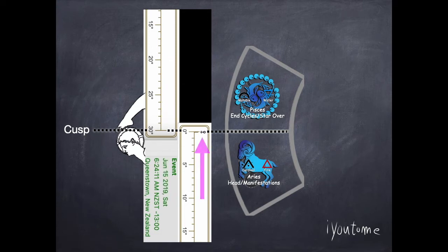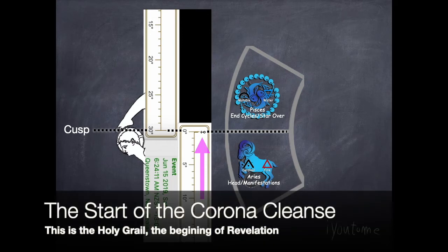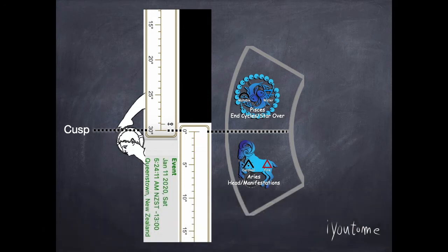Then in mid-June 2019, Eris comes into Aries for the first time in 558 years. Then, on the event known to many astrologers, also called the Great Conjunction on January 12, 2020.